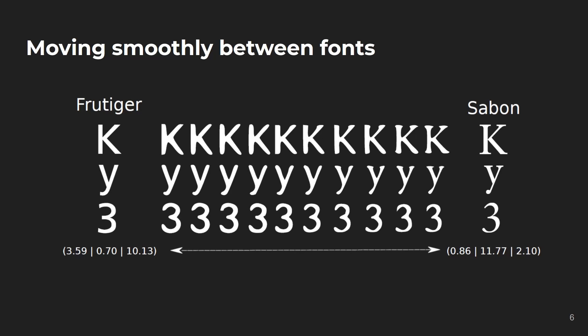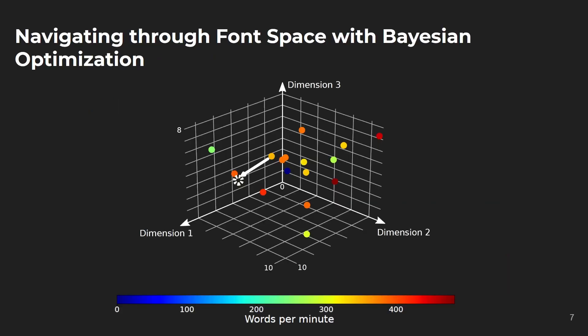We are now able to generate and present fonts to readers and measure their reading speed. We now need a method to generate successively new fonts that explore the font space so we can measure individuals' reading speed, but also exploits these measurements to select new fonts that lead to a higher reading speed with high probability. We use Bayesian optimization, a form of active learning, which can find minima of complex cost functions when the number of samples that can be drawn is limited.